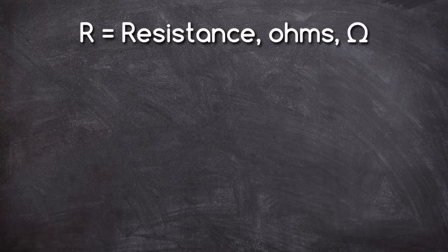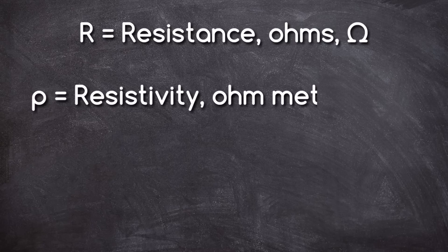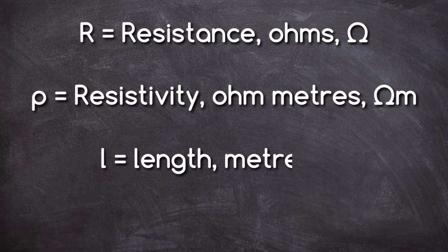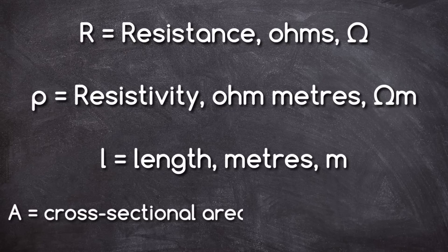We then have the resistivity of the material. We use the mathematical symbol rho. Rho — resistivity — is measured in ohm metres, combining the two symbols omega and m. Notice that this is ohm metres, not ohms per metre — that's something very different. So ohm metres is the unit for resistivity. We've then got L, which is the length of the conductor, measured in metres with the unit symbol m. And finally we have the cross-sectional area, using a capital A for area, measured in square metres — m to the power of two, or m squared.